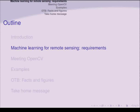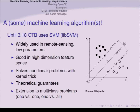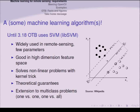For machine learning in remote sensing, we obviously need a machine learning algorithm. In OTB until version 3.18, we used SVM — specifically the LibSVM implementation. It is widely used in remote sensing, has few parameters, and is good in high-dimensional feature spaces. We can solve non-linearity problems with the kernel trick, it has strong theoretical guarantees, and it has extension to multi-class problems. The main algorithm is a two-class solver, but it can be extended to multi-class problems. It tries to find the best separation — the best margin — between the set of samples.